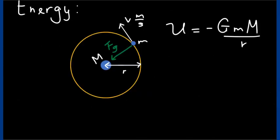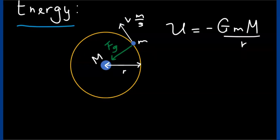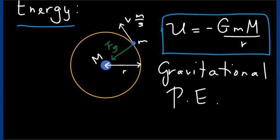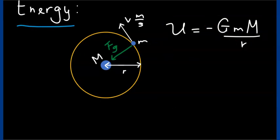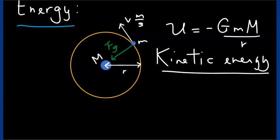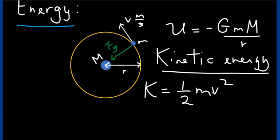Now let's look at the energy of such a satellite moving in a circular orbit with speed v. The gravitational potential energy, as we've seen before, is given by minus G times the product of the masses over r — note the negative sign and the linear r in the denominator. For kinetic energy, we start with the standard expression: one-half times mass times speed squared, and we want to express it in terms of the satellite mass, planet mass, gravitational constant, and orbit radius.